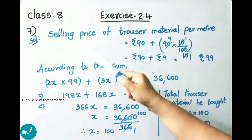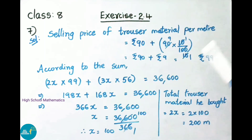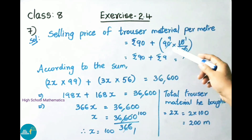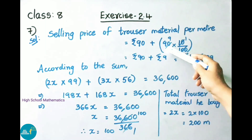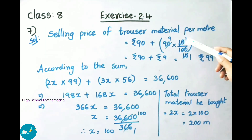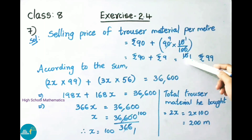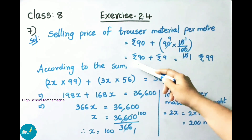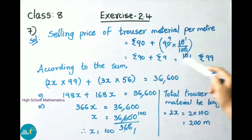The selling price of trouser material per meter equals 90 rupees plus 90 into 10 by 100, which gives 90 plus 9, that is 99 rupees.